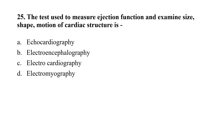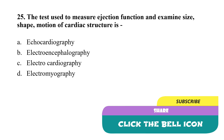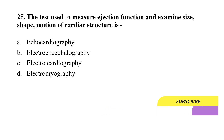Question number 25: The test used to measure ejection fraction and examine the size, shape, and motion of cardiac structures is — option A: echocardiography; option B: electroencephalography; option C: electrocardiography; option D: electromyography. The correct option is A, that is echocardiography, also called echo in short.